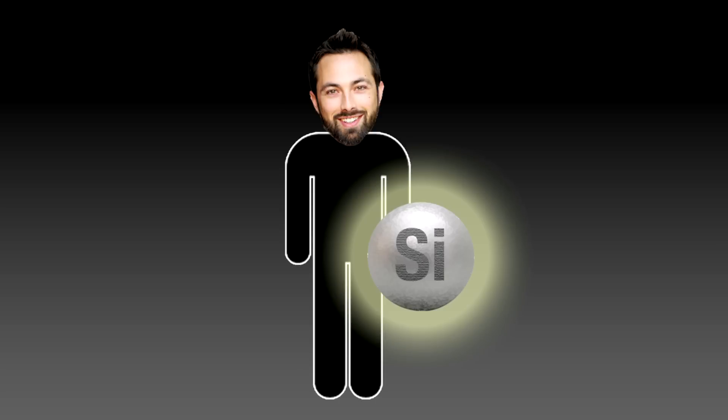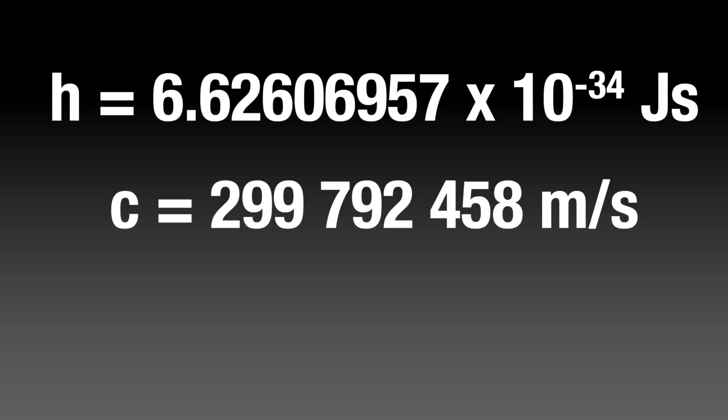So that instead of defining our units in terms of things, we define them in terms of fundamental constants. At the moment, for example, Planck's constant is measured. We define our units and then we make some careful experiment using those units, and then we can say what our measured value of Planck's constant is. But an alternative way of defining the units is doing it the other way around - you define the value of Planck's constant, and then that in turn will define the units that come from there.